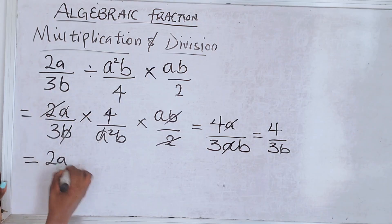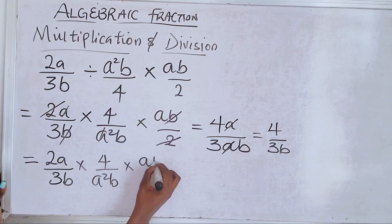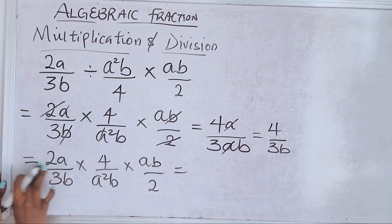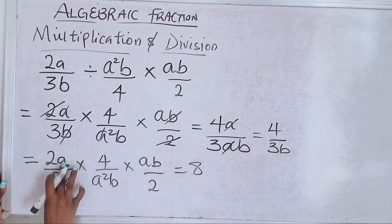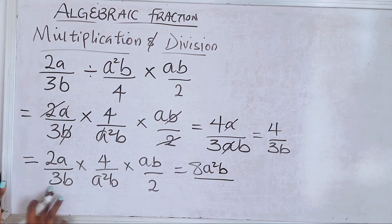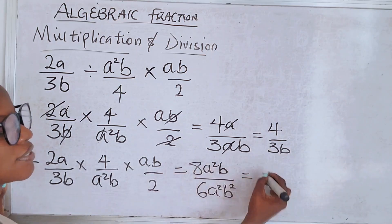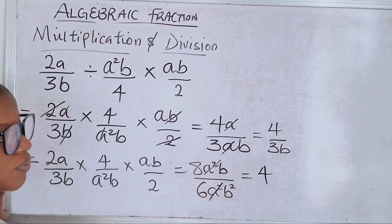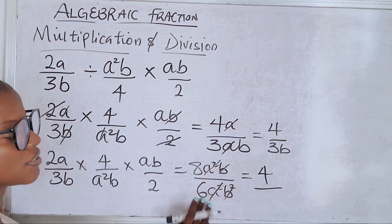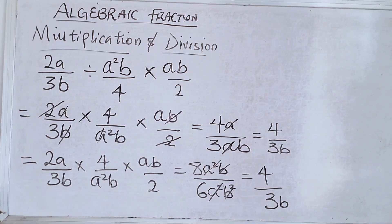Now for those who want to multiply at once, you had 2a/3b times 4/a²b times ab/2. No problem: 2 times 4 is 8, a times ab is a²b, 3 times 2 is 6, b times a²b² is a²b². Here you know that 2 in 8 is 4, a² cancels a², b cancels one b, 2 in 6 is 3 and that gives you 4a/3b. So you see that you would always arrive at the same answer regardless of how you decide to solve yours.